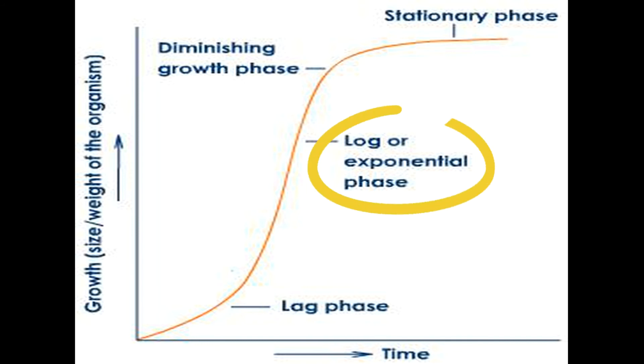Next, we have the log phase or the grand period of growth or the exponential phase. During this phase, we have rapid growth of plant. Next, we have the diminishing phase. And during the diminishing phase, this is when growth slows down. And lastly, we have the stationary or the steady phase. This is where growth finally stops.